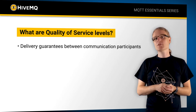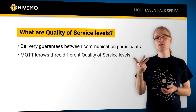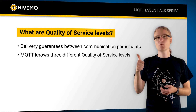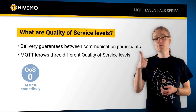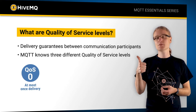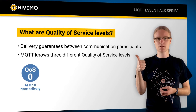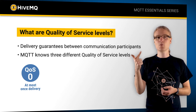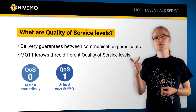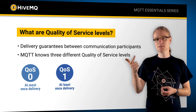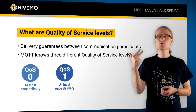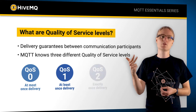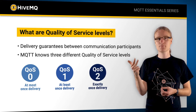MQTT knows three different quality of service levels. Number one, we have quality of service zero, which means at most once delivery. We have quality of service level one, which means at least once delivery. And we have quality of service level two, which is exactly once delivery.